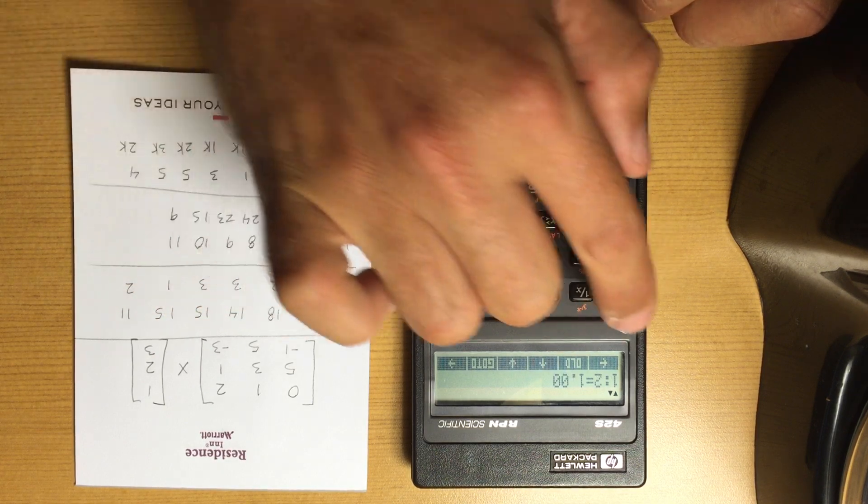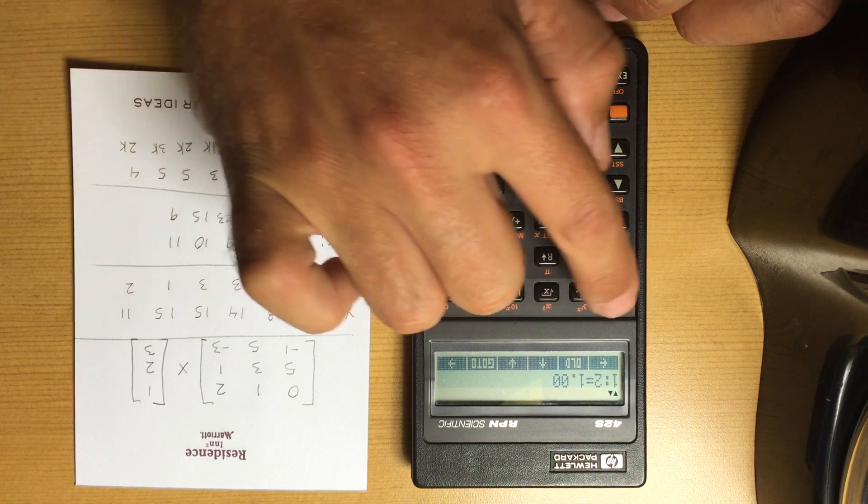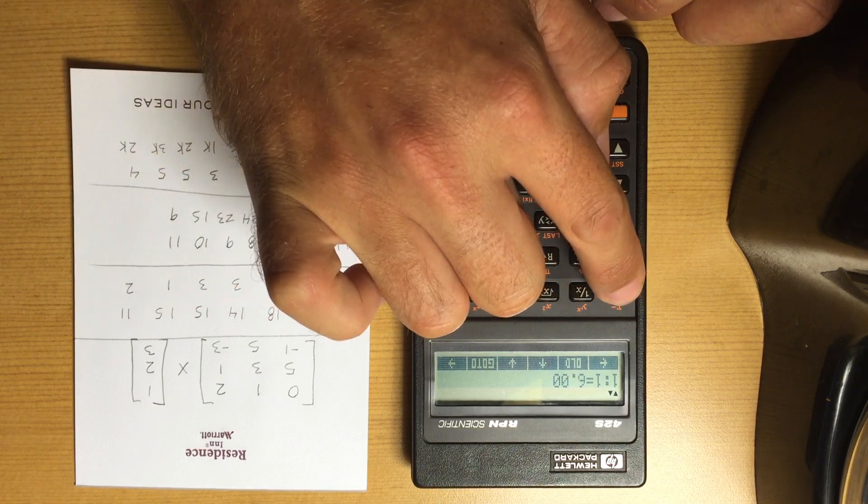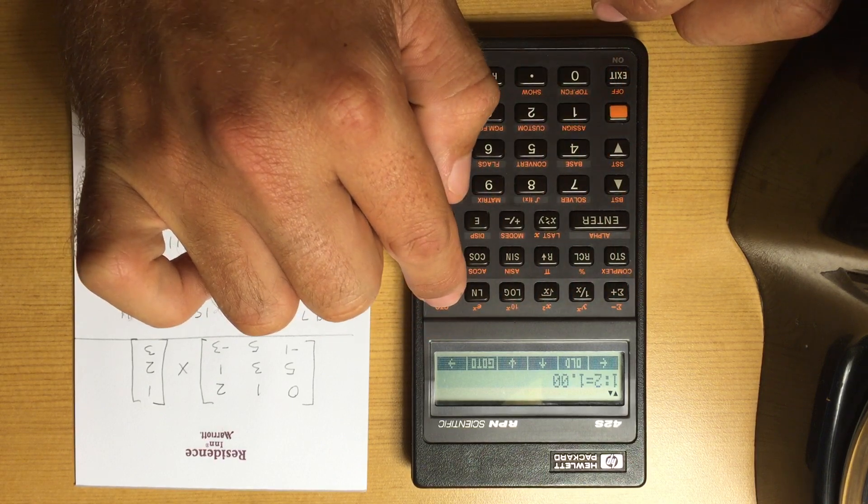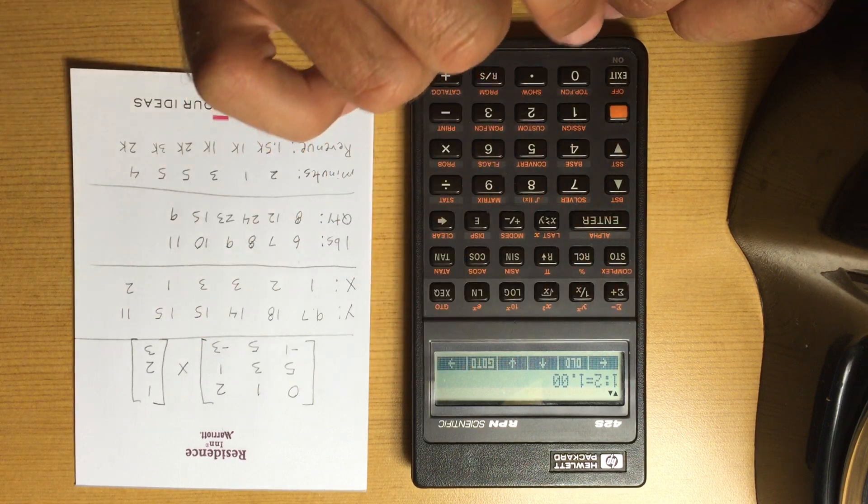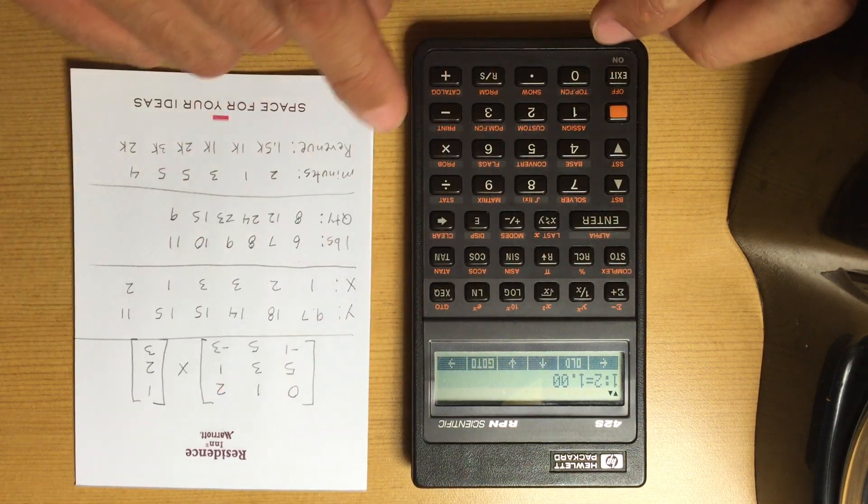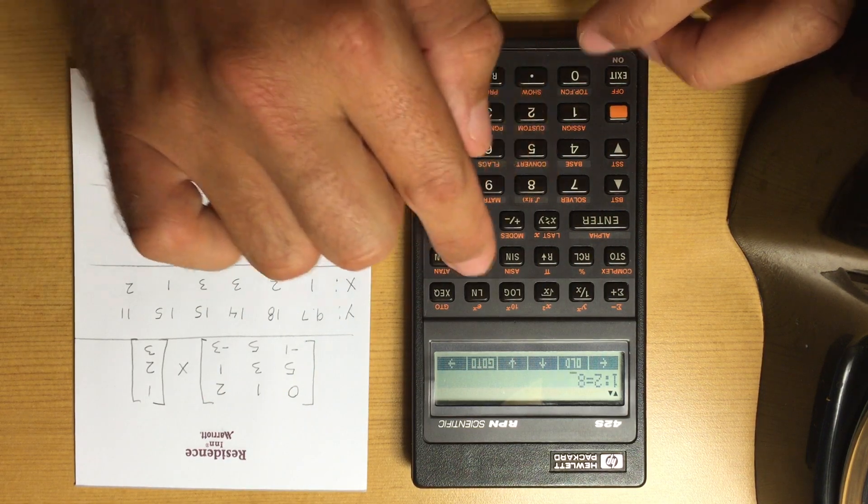And it wraps around back to the top. So 1,1 is 6, and I had some values in that before.